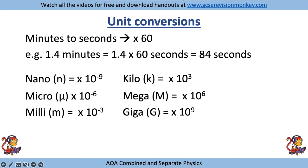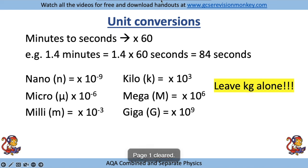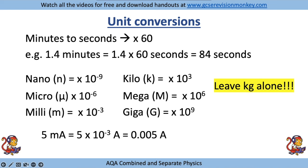When these prefixes appear in front of units you must do a conversion to get that extra mark. My top tip is to leave kilograms well alone, because mass is supposed to be in kilograms - it already has the kilo prefix. But if you see anything else, convert it first. For example, 5 milliamps: swap out milli for times 10 to the minus 3, giving 5 times 10 to the minus 3 amps, which is 0.005 amps.